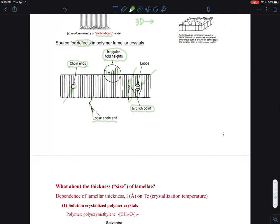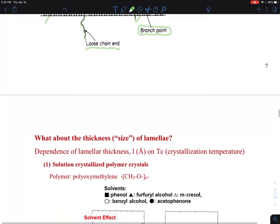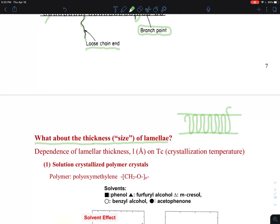The natural question that comes about, quite importantly, is what about the thickness of the lamellar? We all kind of know lamellar, you can simply draw it like this. The chains are packing like this. What would be the average size? And that's what we call L.